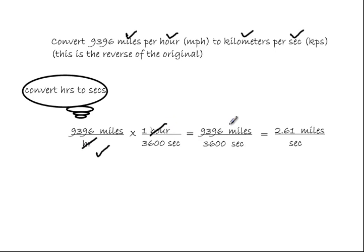And I wind up with units left of miles on top, seconds on bottom, and I wind up with the math being 9,396 divided by 3,600, which is 2.61 miles per second.